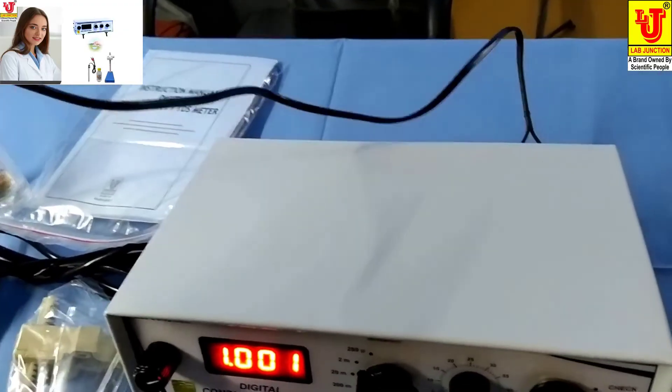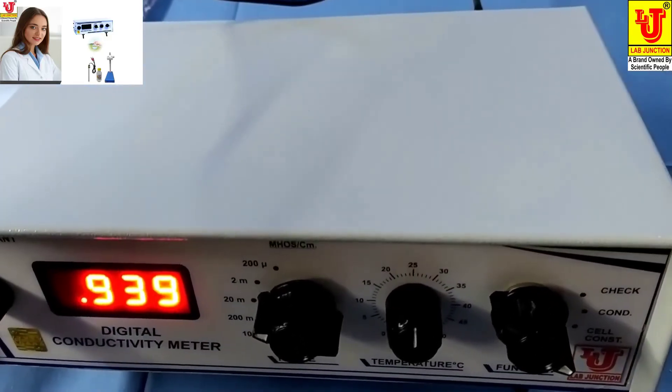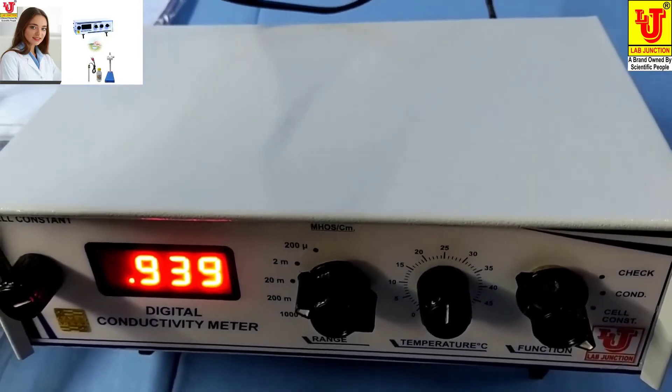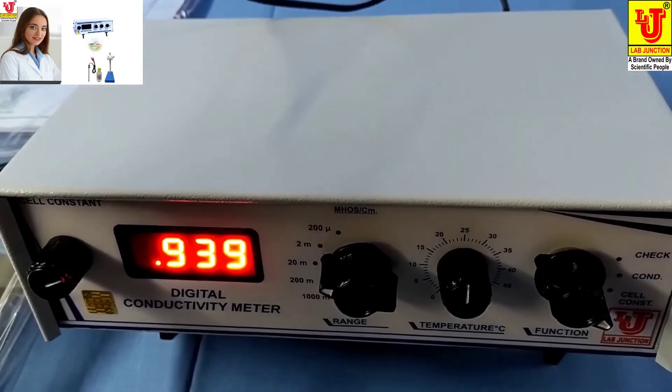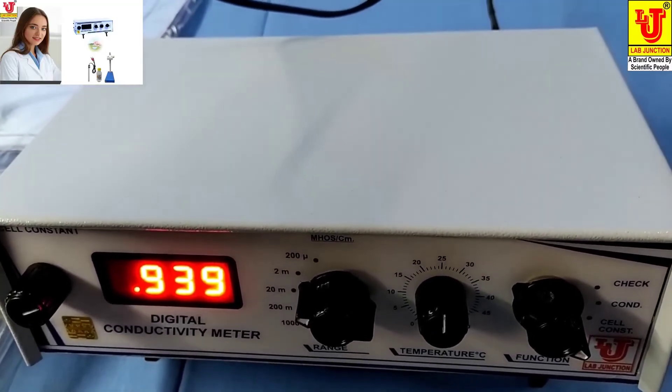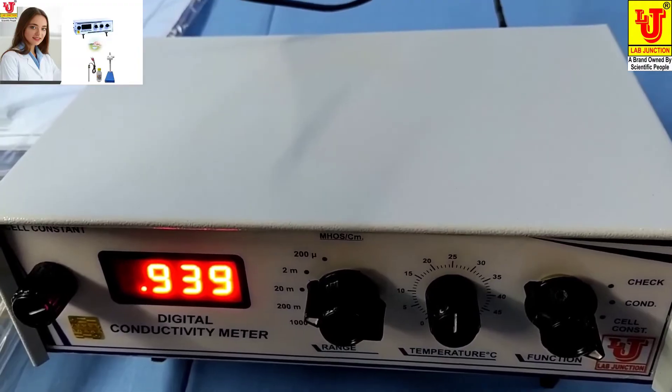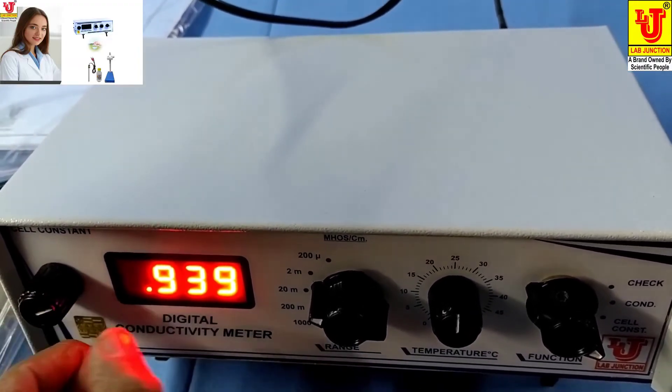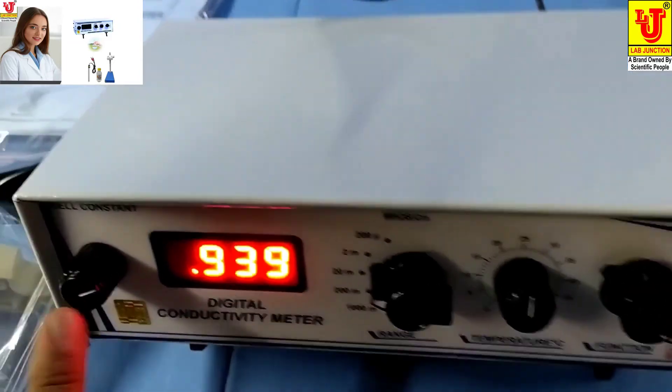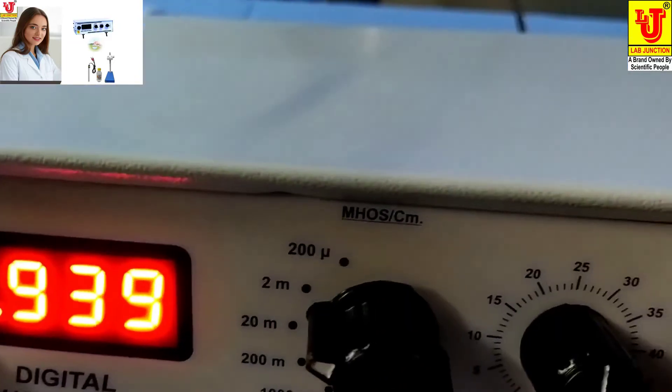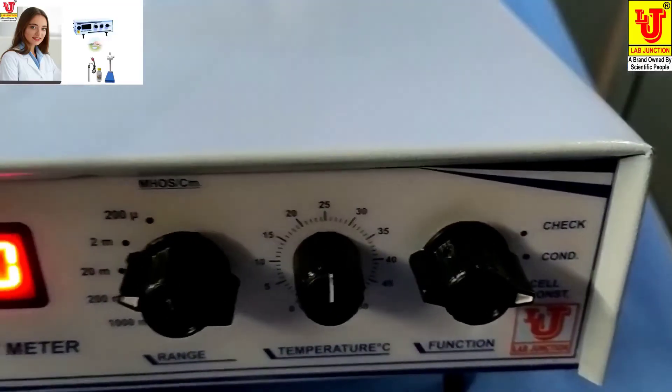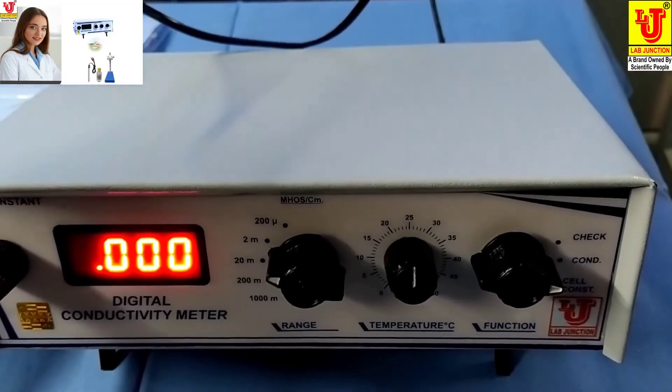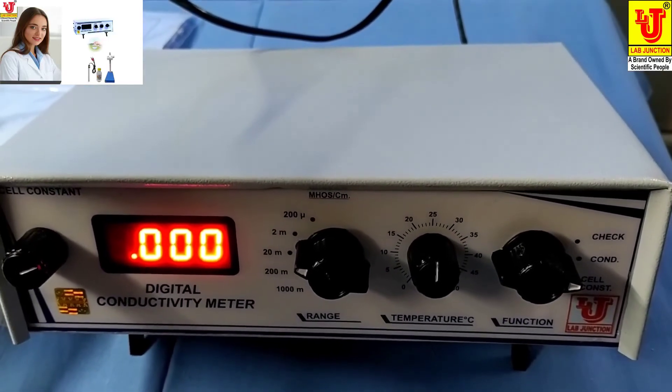Now you directly go to cell constant. You have noted 0.939 on your notebook. Then insert same value with the help of cell constant knob, 0.939 from cell constant knob, and go to conductivity. Again, your digital conductivity meter is ready for use.